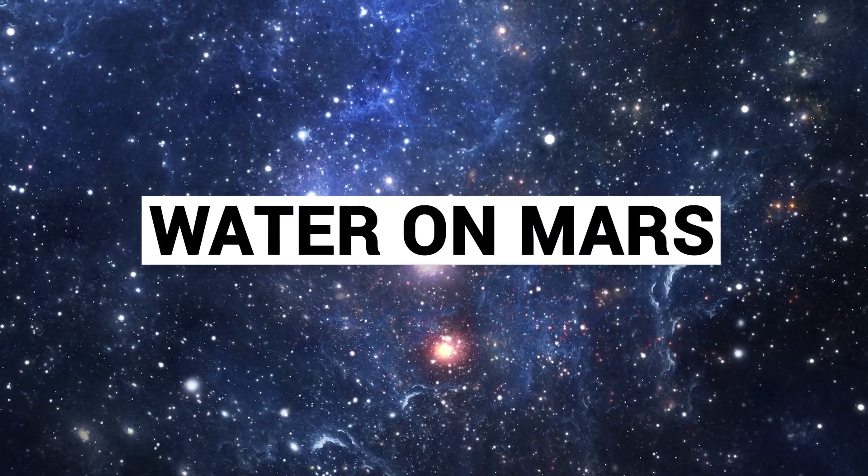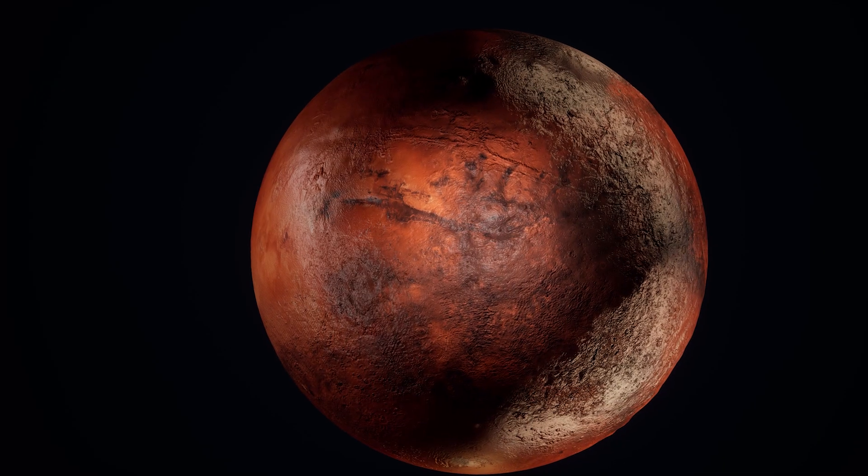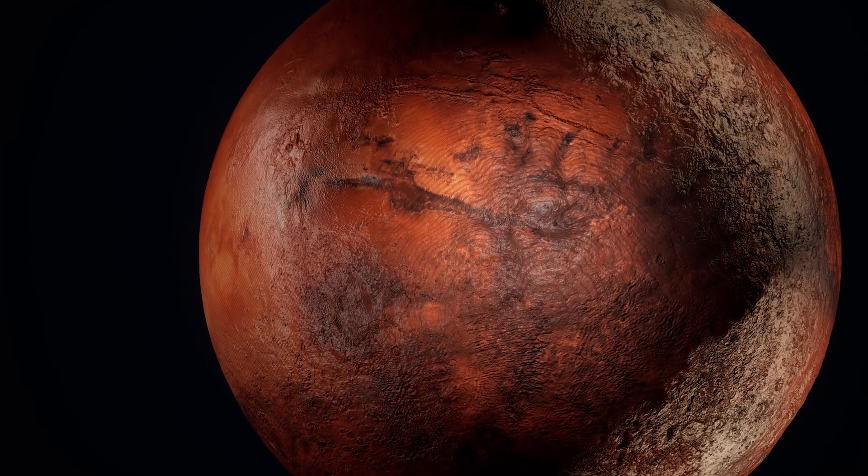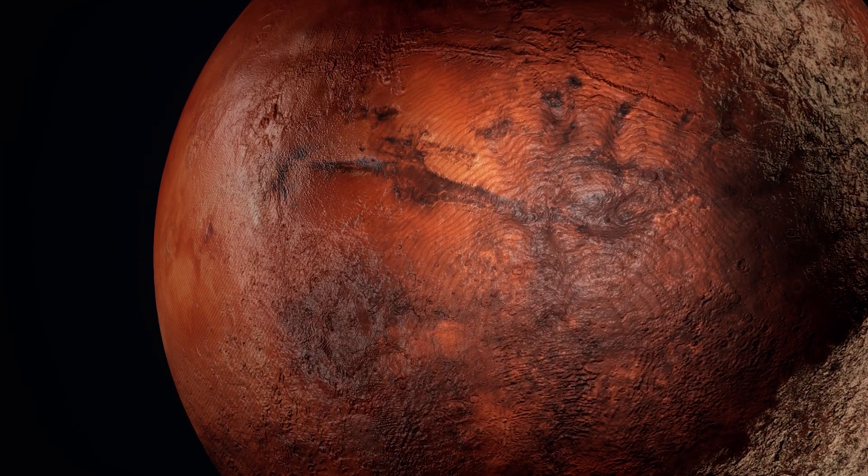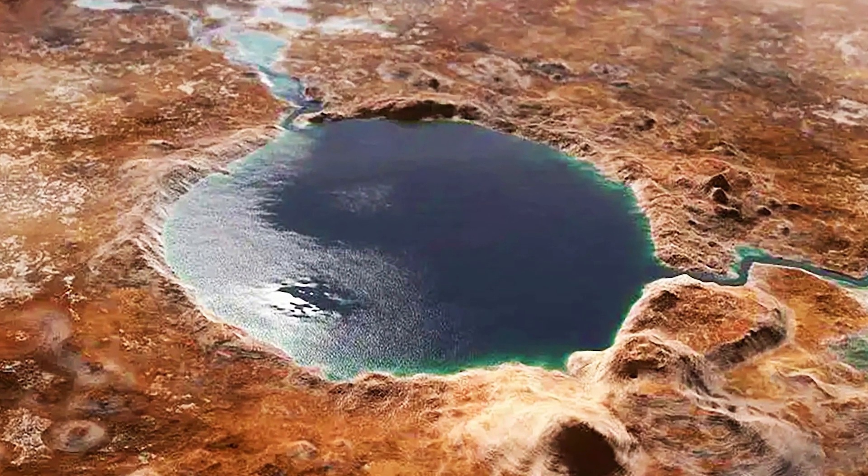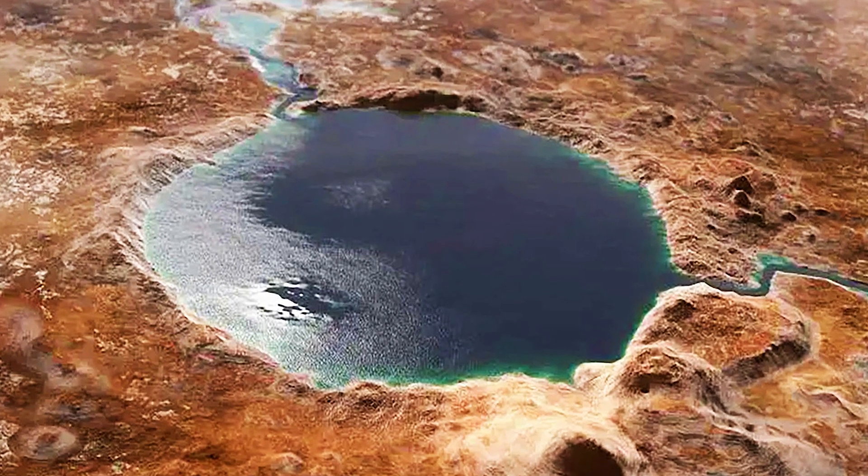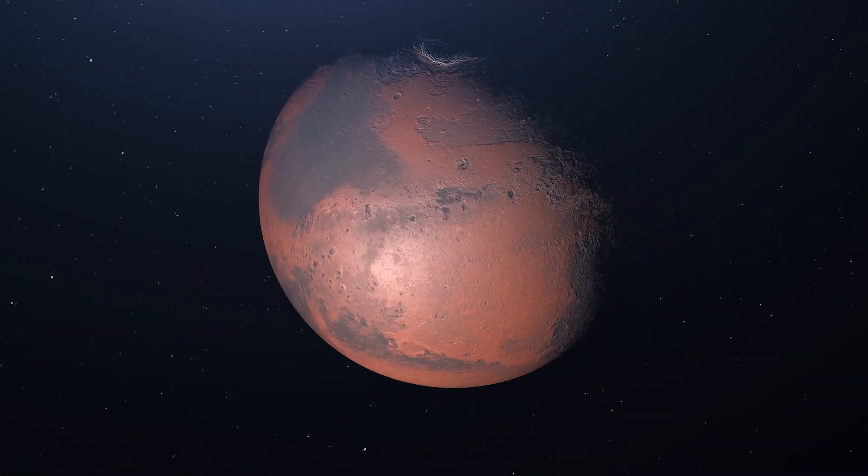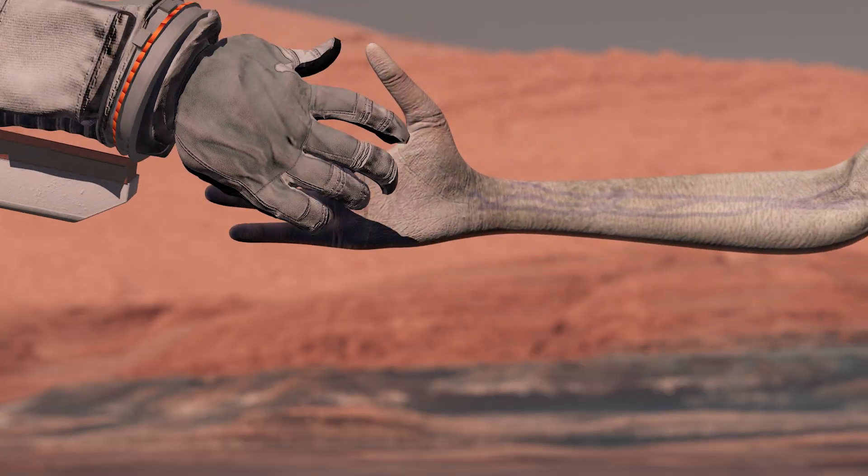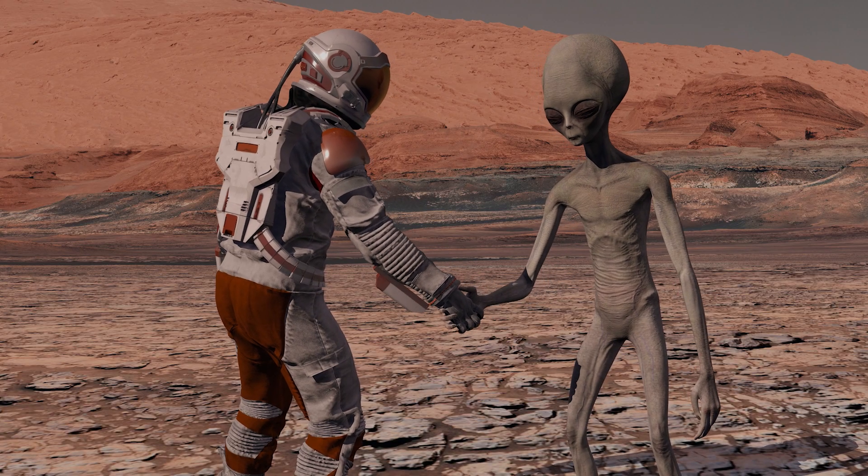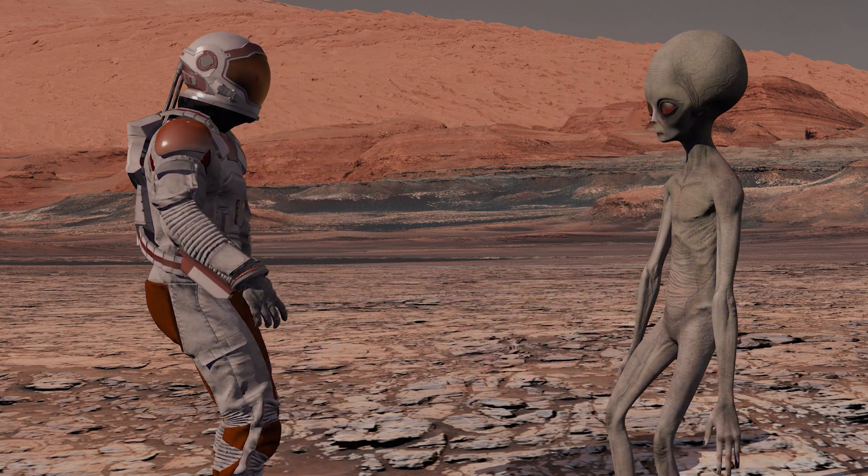Water on Mars. Finding water on Mars was once a fantasy, but in recent years, scientists have discovered ice and even evidence of seasonal liquid water. The presence of water opens up the possibility of life on Mars, either in the distant past or potentially even in hidden regions today. Mars exploration missions are now focused on finding signs of life, past or present, in these water-rich areas.